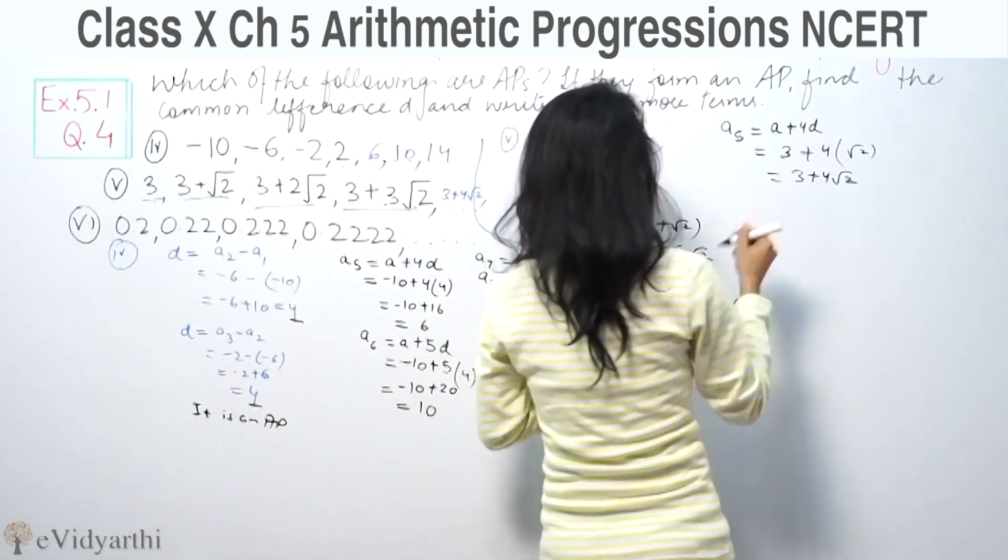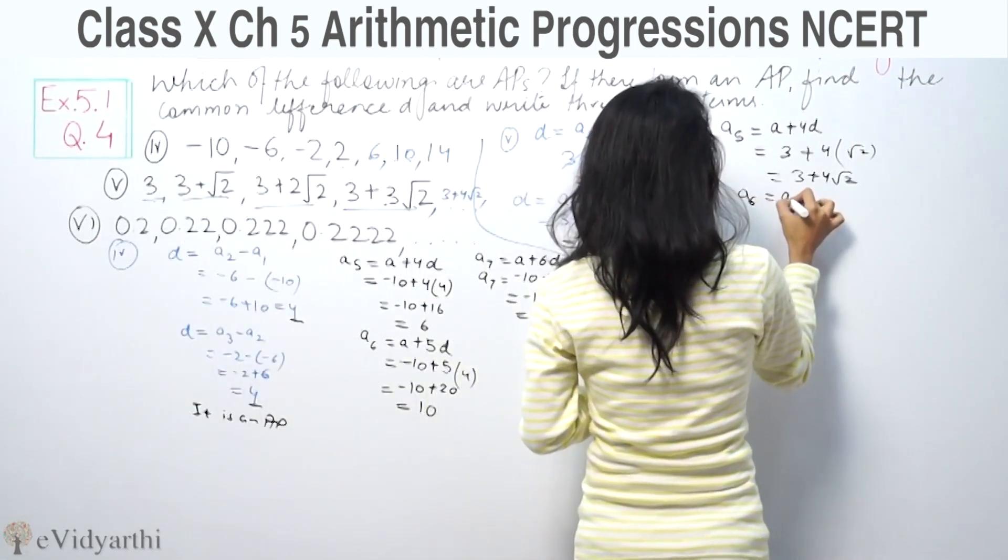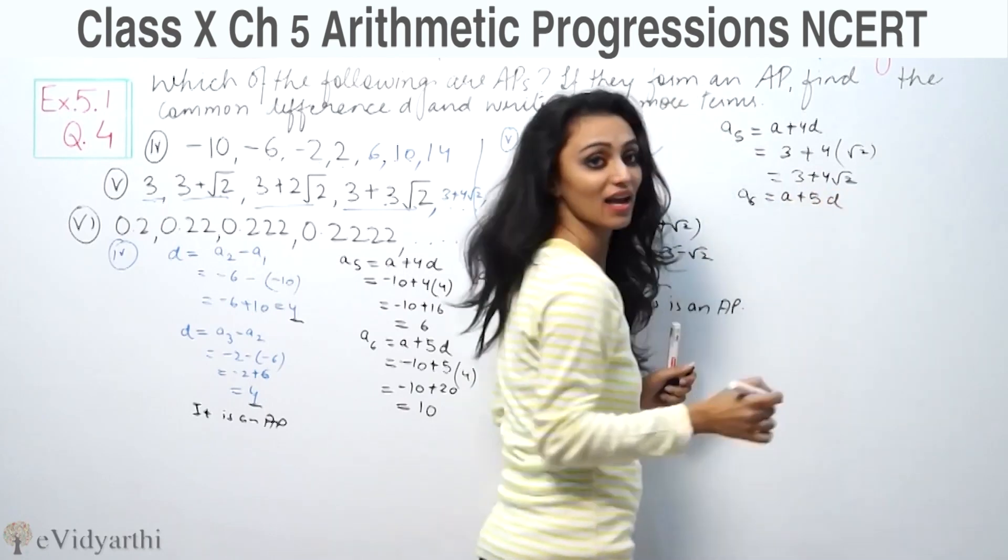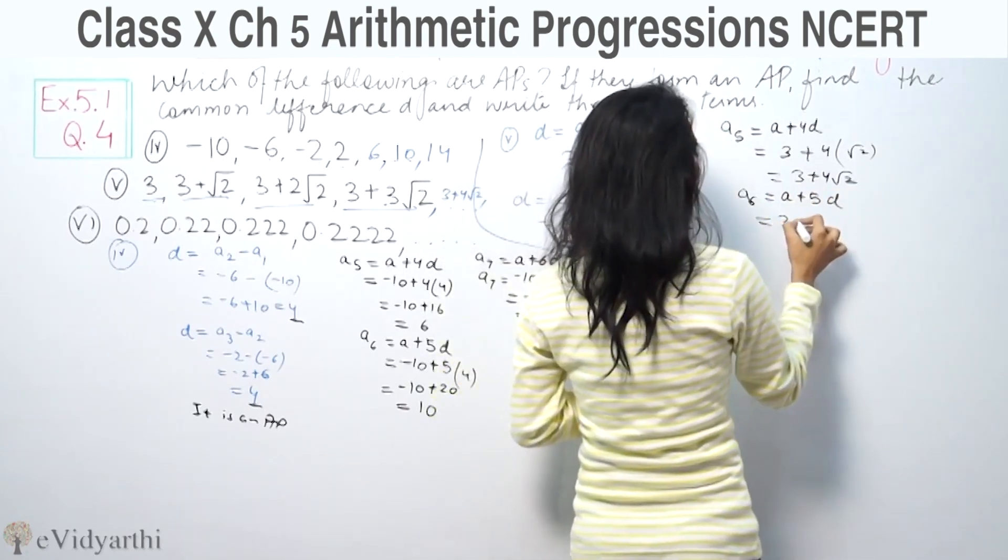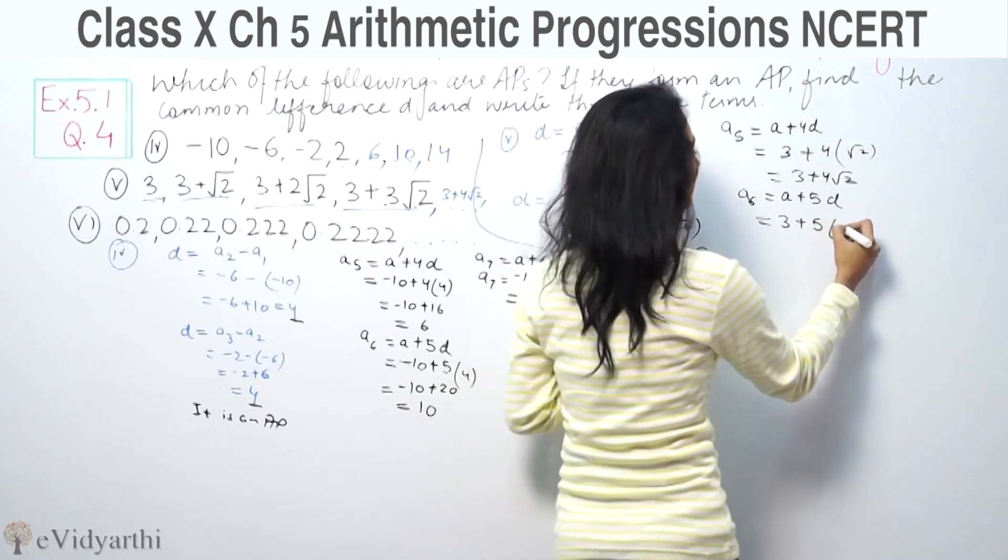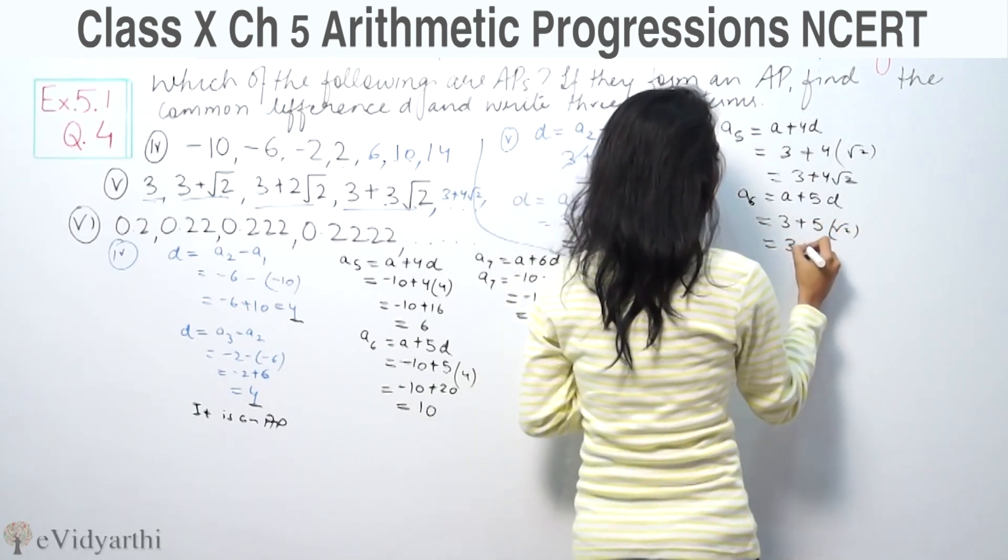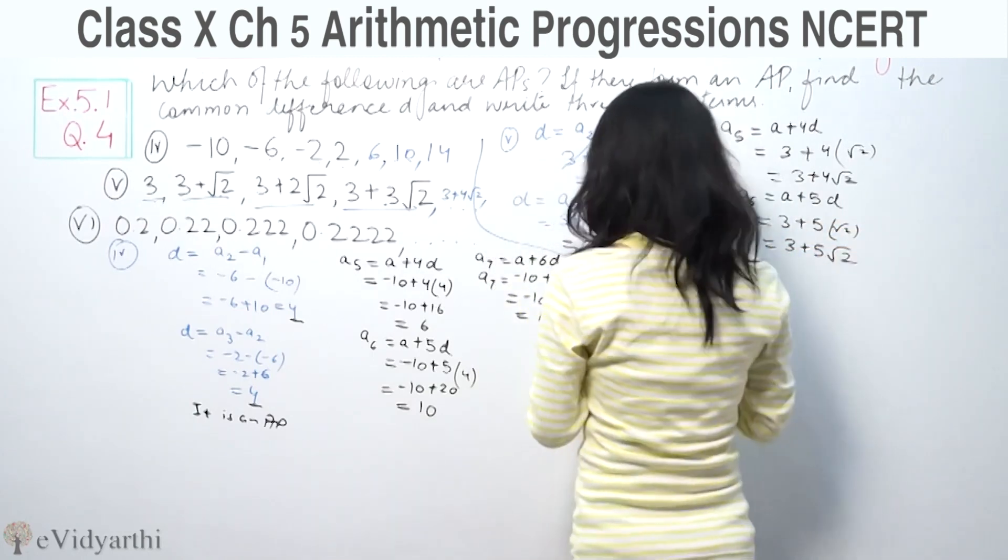Next, A6 equals A plus 5d. Our first term is 3, and d is root 2, so 5 times root 2 equals 5 root 2. Therefore A6 equals 3 plus 5 root 2.